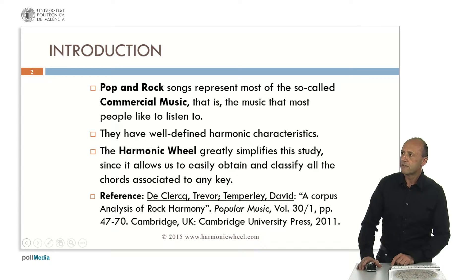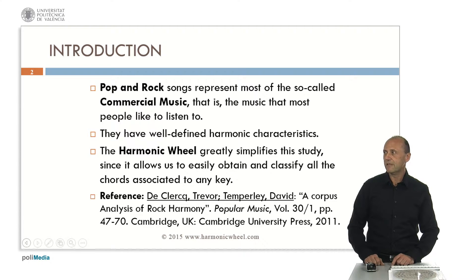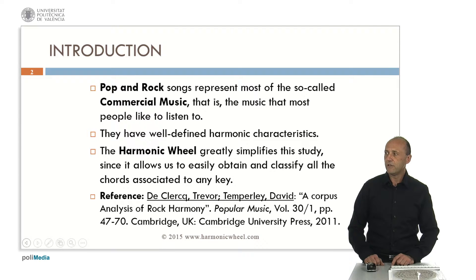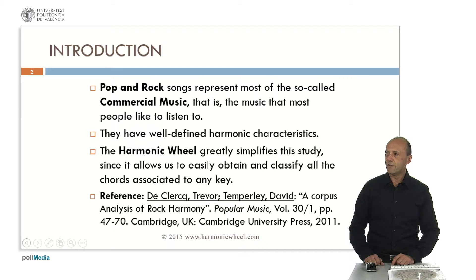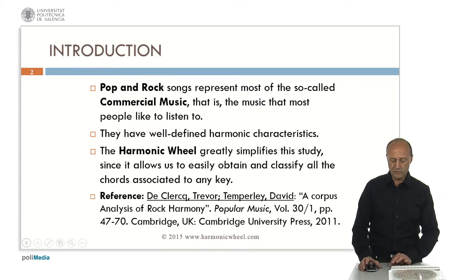Pop and rock songs represent most of the so-called commercial music, that is, the music that most people like to listen to, so it's very important for composers to know their characteristics. In fact, the harmonic characteristics are very well defined. Additionally, the harmonic wheel greatly simplifies this study since it allows us to easily obtain and classify all the chords associated to any key. In this study, I obtained some statistics from the works by Trevor de Klerk and David Temperley published in the journal Popular Music by Cambridge University Press.